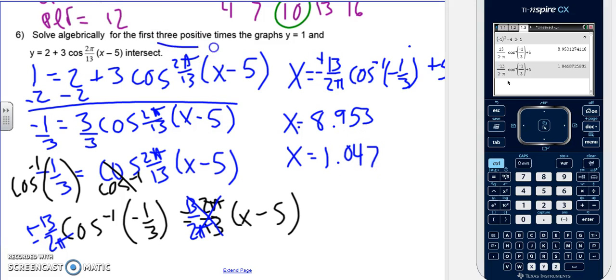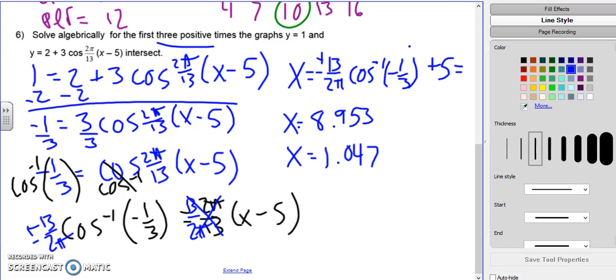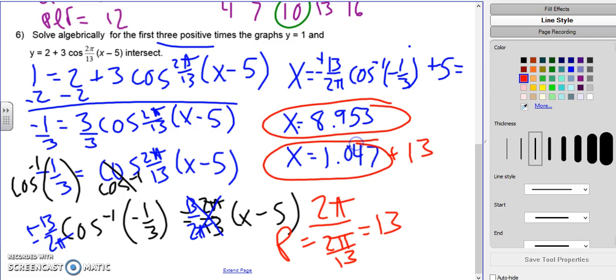Now those are both positive, but I need three values. So we need to find the period. So I am going to do 2 pi divided by 2 pi over 13, which is B. So the period is 13. And then we got to add the period to this one because that's the first one there. So we're going to get 14.047. So that is my third value. So there's my three values.